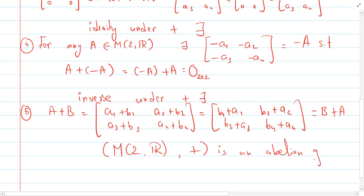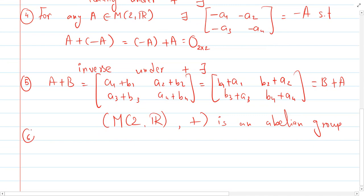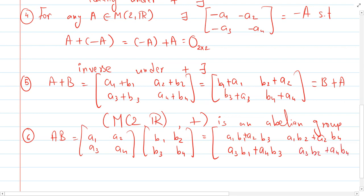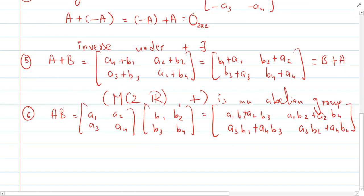Now we move to the multiplication operation. The first property needed is binary closure. We compute A·B explicitly: the matrix product of A = [a₁, a₂; a₃, a₄] and B = [b₁, b₂; b₃, b₄] gives entries a₁b₁+a₂b₃, a₁b₂+a₂b₄, a₃b₁+a₄b₃, a₃b₂+a₄b₄. Since we are just multiplying and adding real numbers, the result cannot leave ℝ, so A·B is again an element of M₂(ℝ). Binary closure under multiplication is confirmed.